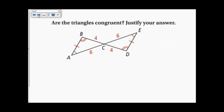Here's a picture. Are the triangles congruent? If so, justify your answer. For them to be congruent, all the corresponding parts have to be congruent. These sides are congruent because of the tick marks — these are both six, and these are both four. I also have two angles that are vertical angles, and by the vertical angles theorem they are congruent. So all the corresponding parts are congruent, and the answer is yes.